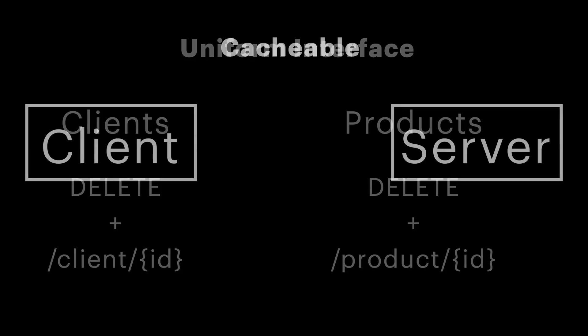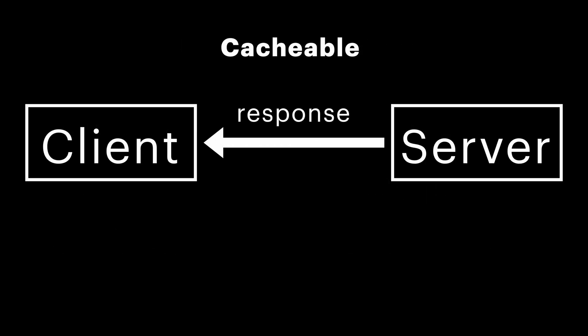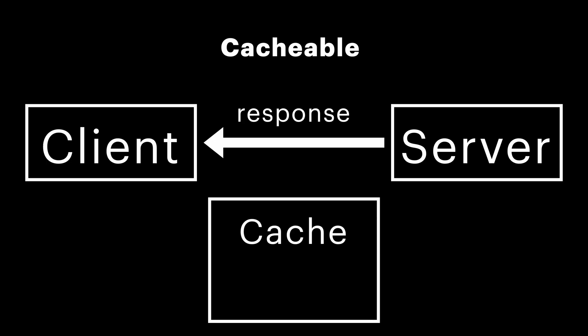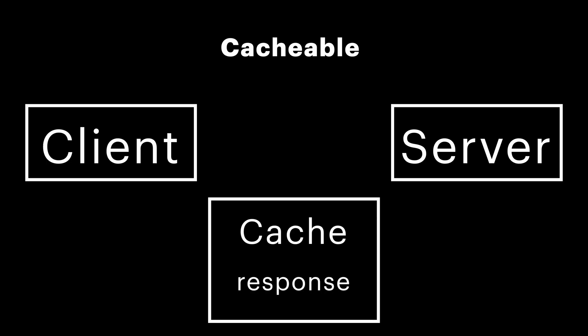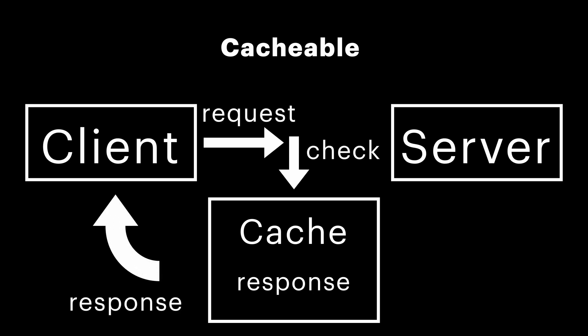The cacheable constraint is really easy. It states that every response should explicitly define whether it's cacheable or not. If it is, such a response can be stored and reused by the client instead of making the same requests over and over again just to get the same data. This helps improve performance and reduce unnecessary network traffic.